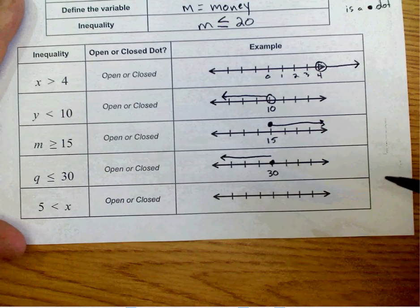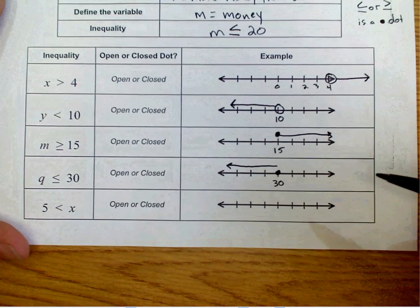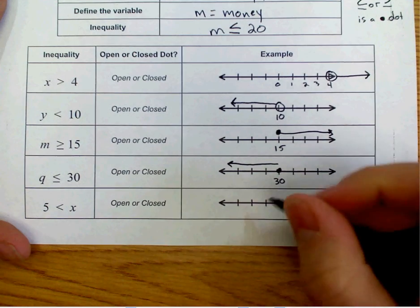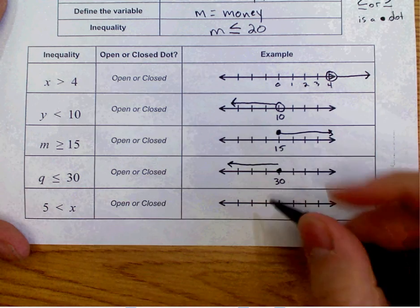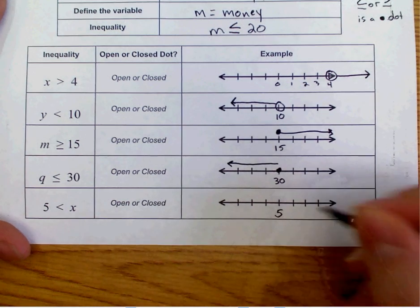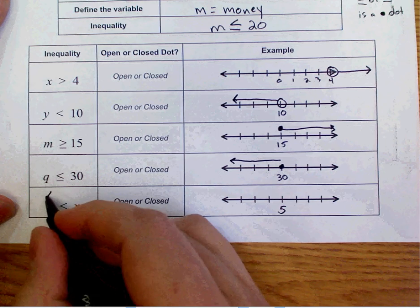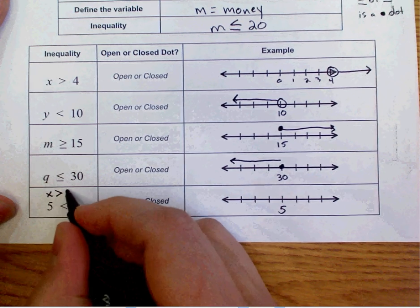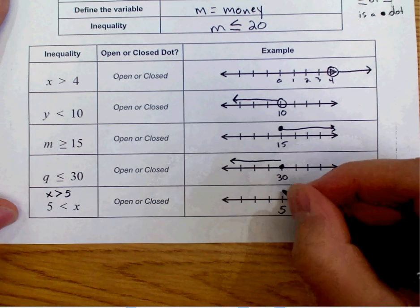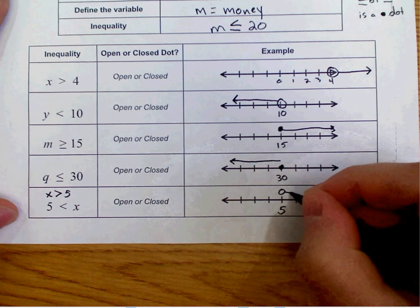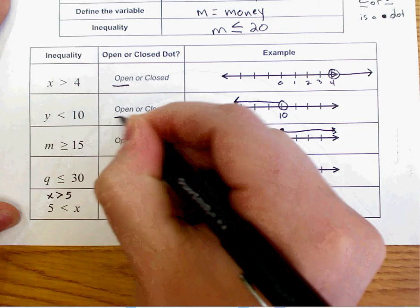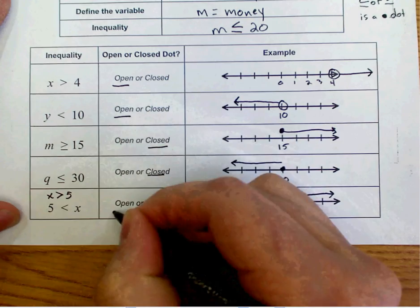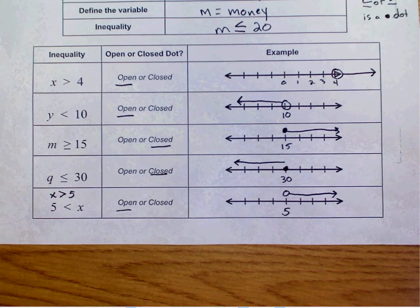Go ahead and complete this last one really quickly. Ready? Go. All right, we have 5 is less than X. If we flip that around, that's the same thing as X is greater than 5. So it's an open dot with a line going to the right. So we have open, open, closed, closed, open. All right, good luck.